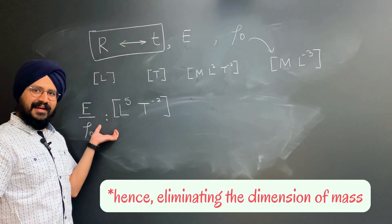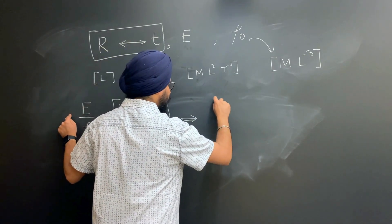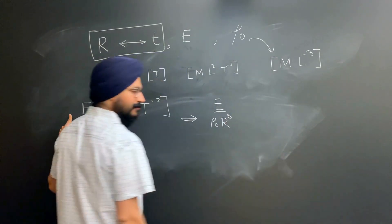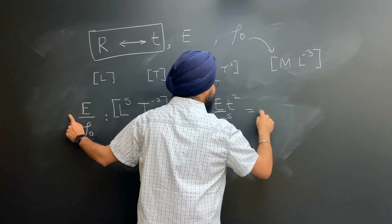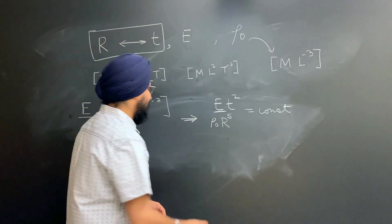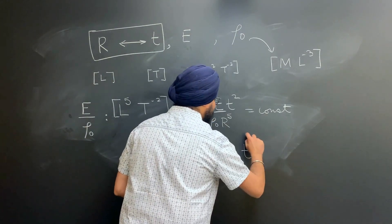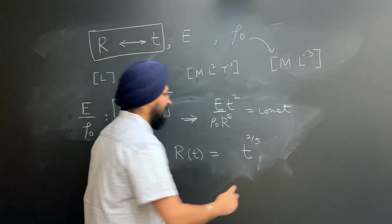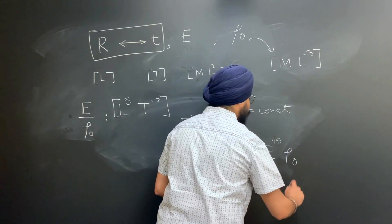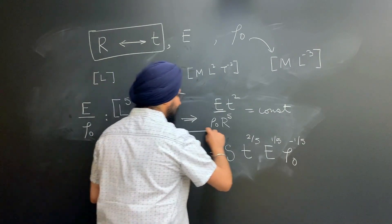Just by looking at that, we can make a claim that the following combination E over rho not divided by r to the fifth times t square better be a constant because this combination is going to be dimensionless. Rearranging this, it gives me that my radius of the blast wave will depend on the time with the power law of 2/5, the energy of the blast with the power of 1/5, the density of undisturbed air rho not to the minus 1/5, and I also have a proportionality constant s that I'm going to put out front.